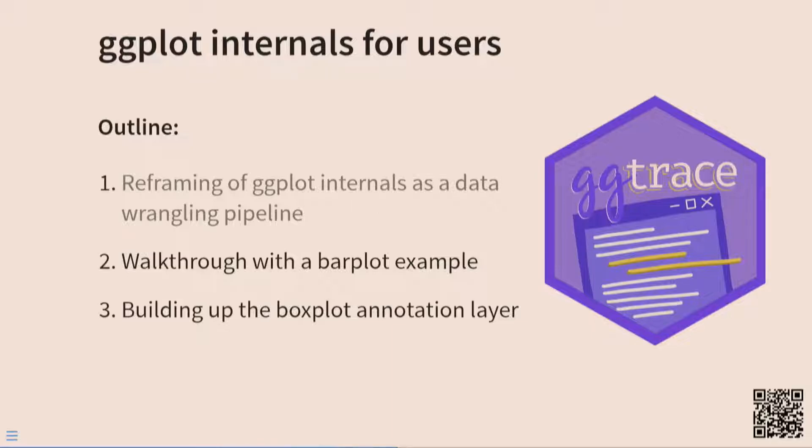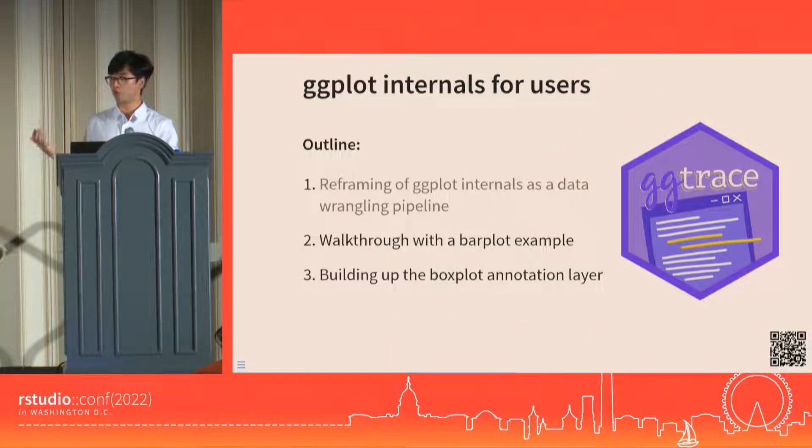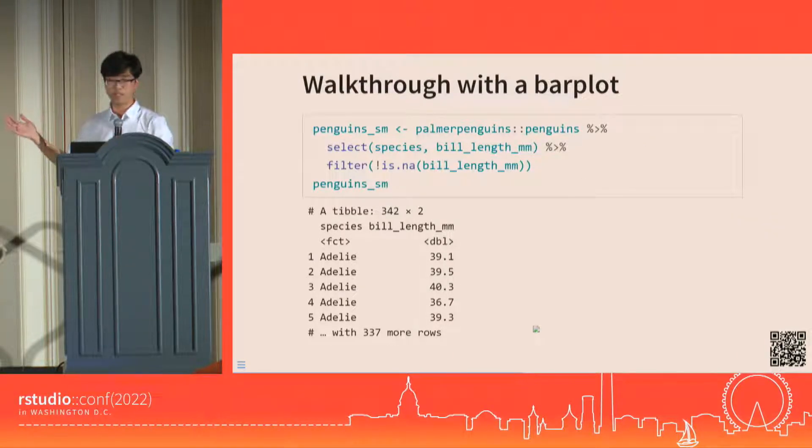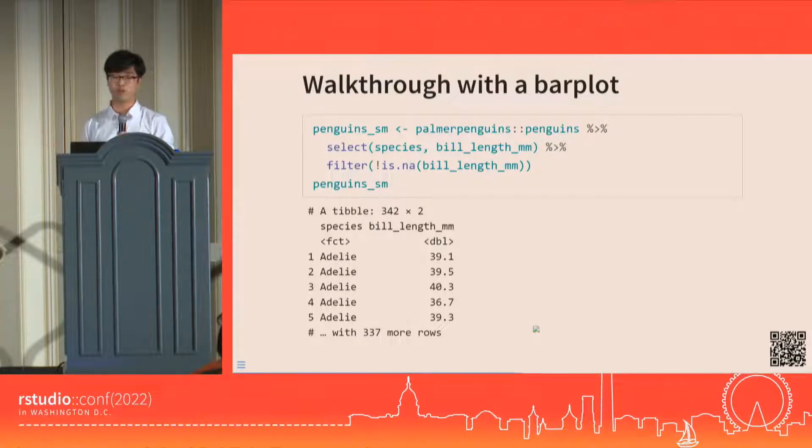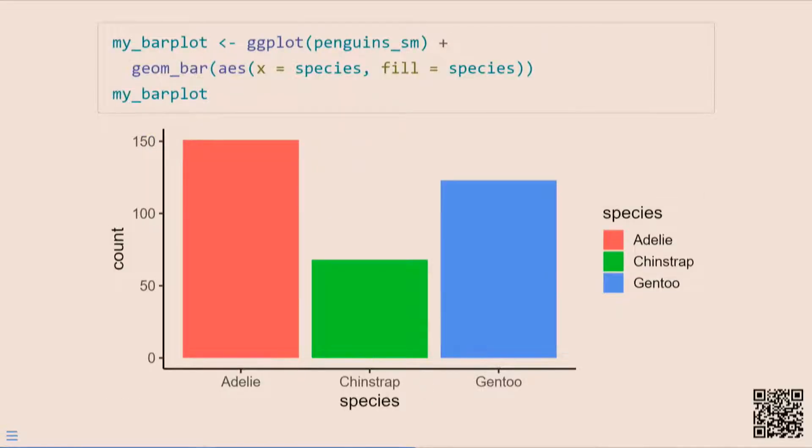Now that we're equipped with the tools to peek inside the internals, let's use these inspect functions to walk through how a layer gets built for the bar plot step by step. We'll be using the penguins dataset. If you're not familiar, this is a dataset where each row is a penguin with columns for species and bill length. Using geom_bar, we can visualize the count of penguins in each species by mapping the species column to x and fill. Simple, right? Pretty straightforward.